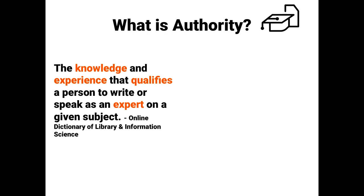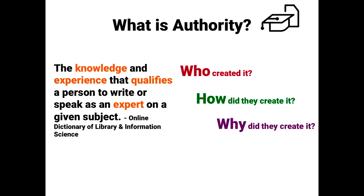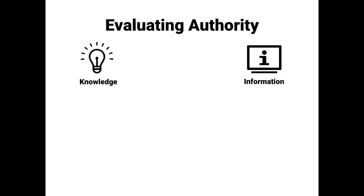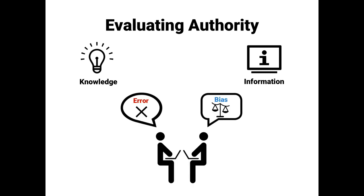Evaluating the authority of a source requires understanding who created it, how they created it, and why they created it. To evaluate authority, you should first recognize that knowledge and information are created by people like you and me, and therefore prone to error and bias. Secondly, you should recognize that information also changes and develops over time.